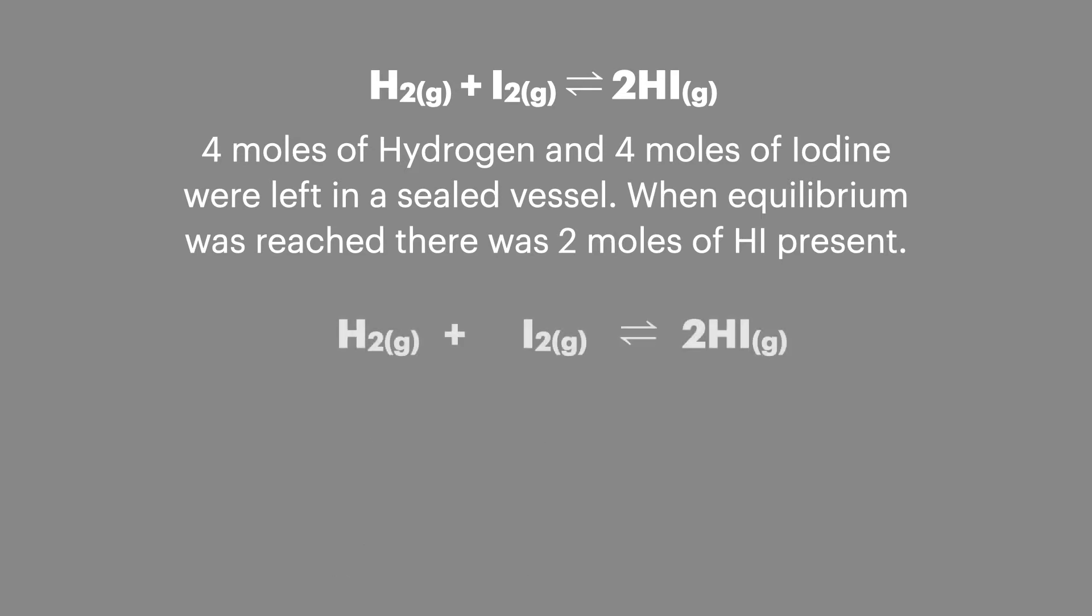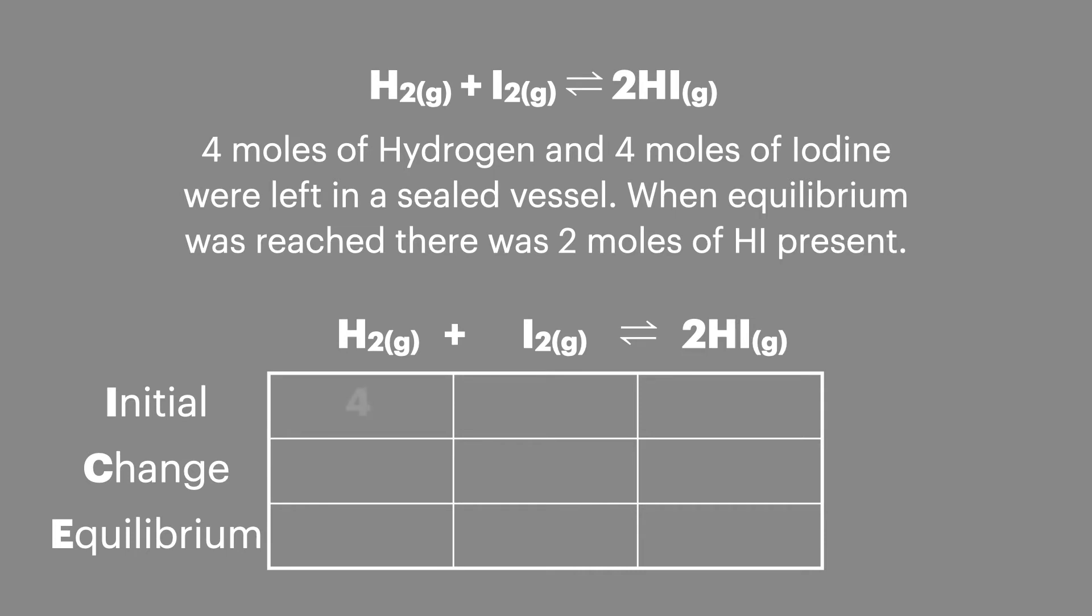To give these calculations a bit more structure we'll show them in an ICE table. And we'll start off by filling the values that we know from the question. So we'll add in our starting moles of H2 and I2 along with no moles for HI. Then looking at the question we can then add an equilibrium number of moles for HI. Looking over the table we can add in the changes so we've gone up by two moles for HI, down by one mole for I2 and down by one mole for H2.